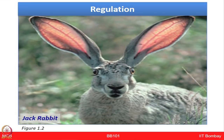The jackrabbit illustrates regulation — how blood flow is regulated in the blood vessels, and even its ears help maintain constant body temperature. When the rabbit runs fast it generates a lot of heat, so the ears exchange that heat with the surrounding air and try to maintain body temperature.